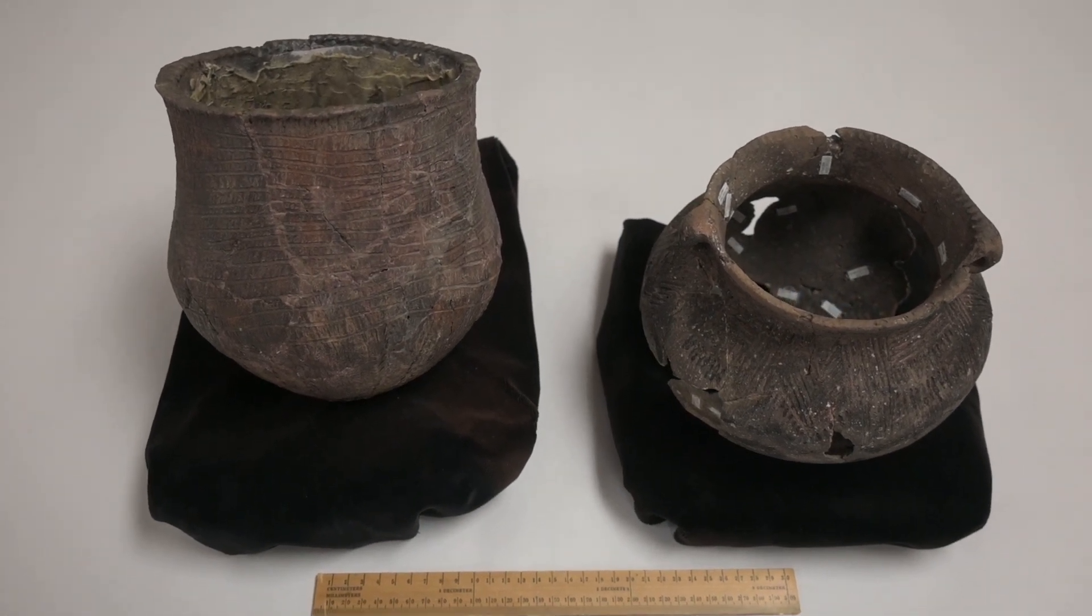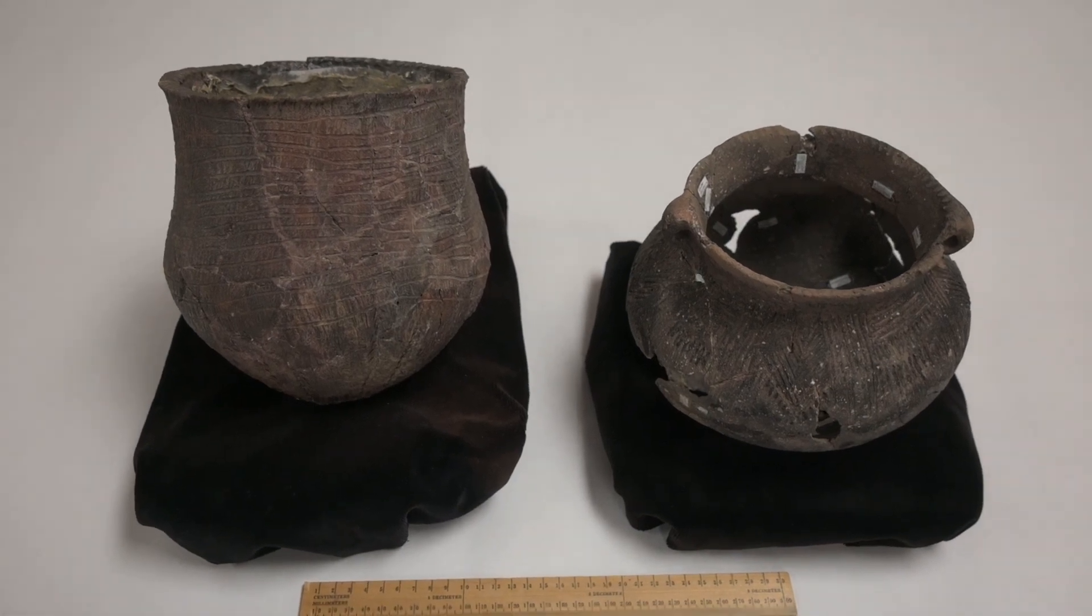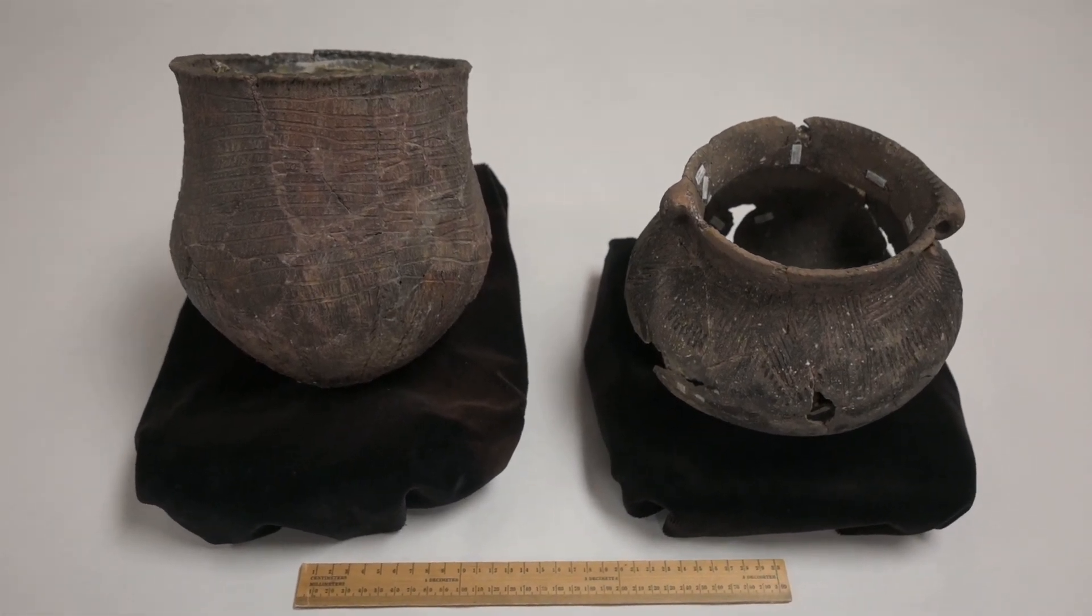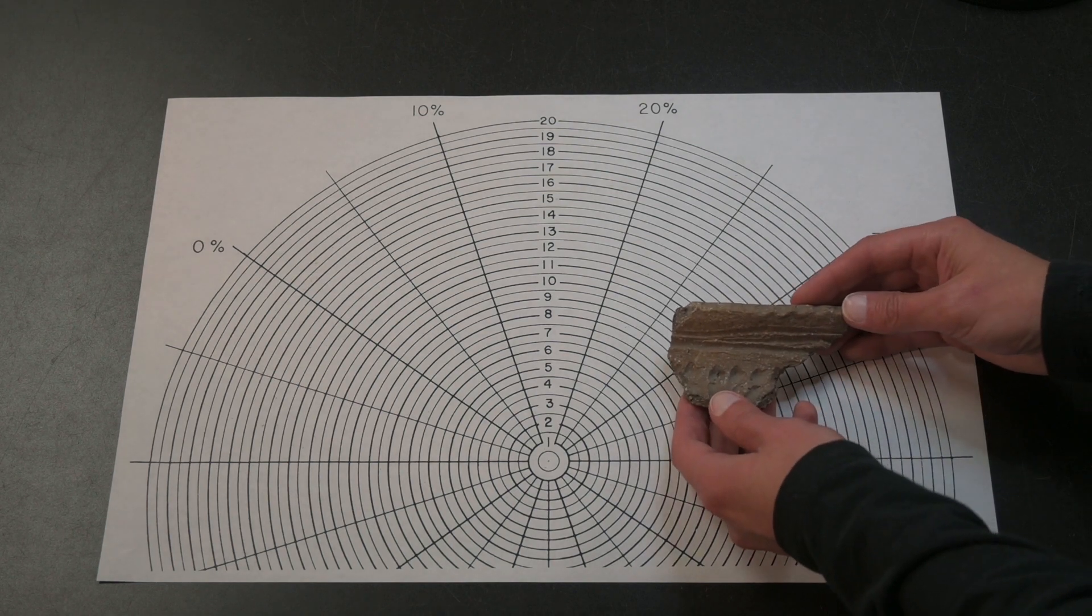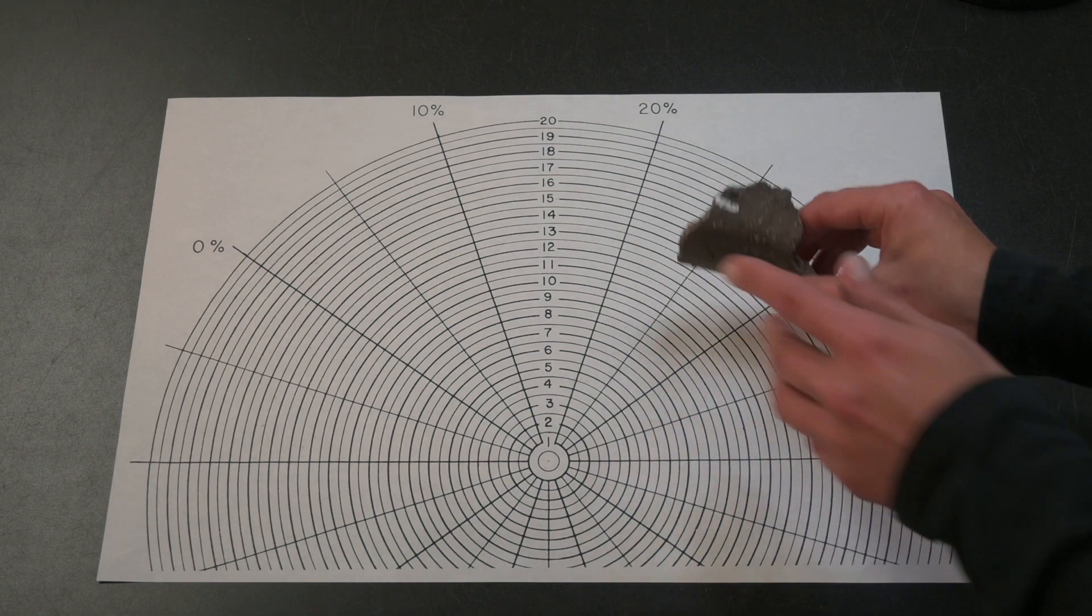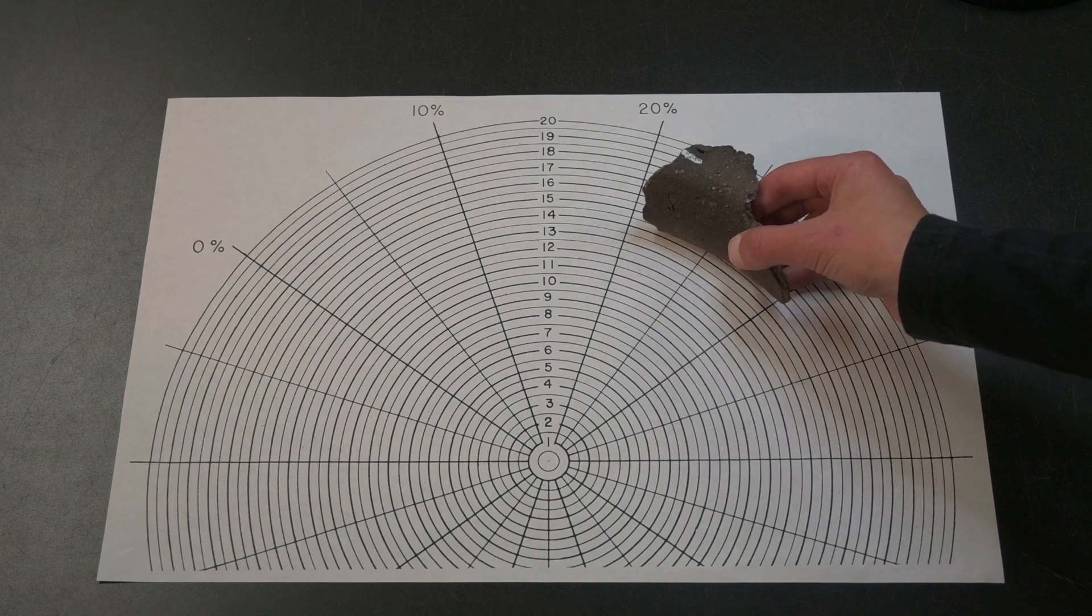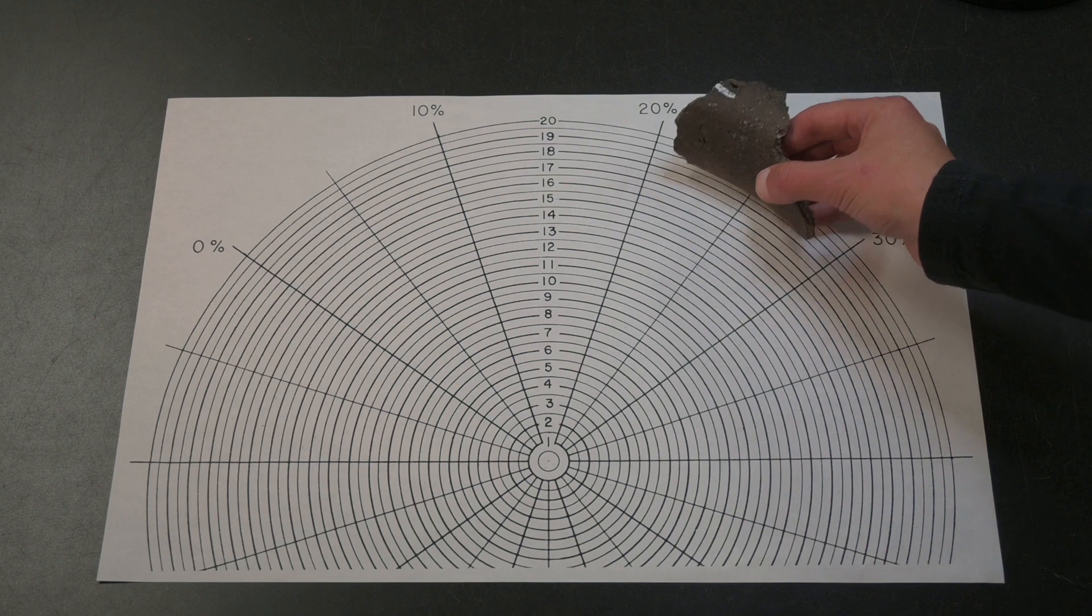Usually, we can't just measure across a vessel's opening to determine its diameter, like we can with these pots. A radius or rim chart, such as this one, allows us to place a rim fragment from a vessel with a circular or nearly circular opening on the concentric rings to determine which radius line is the best fit.